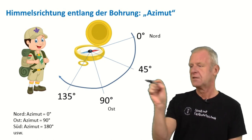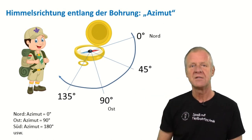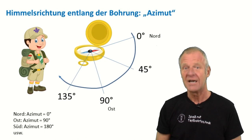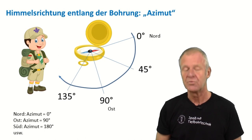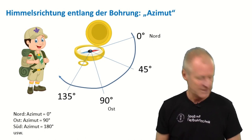We also always need to know the direction we are drilling to. The experts call the compass direction the azimuth. So we measure the azimuth and the inclination.